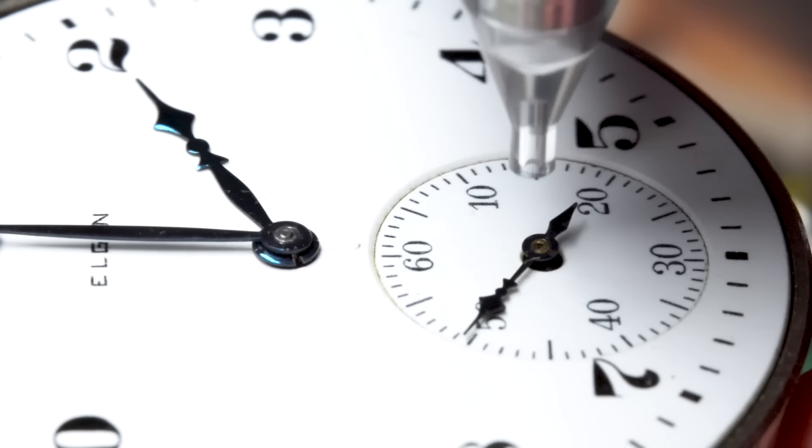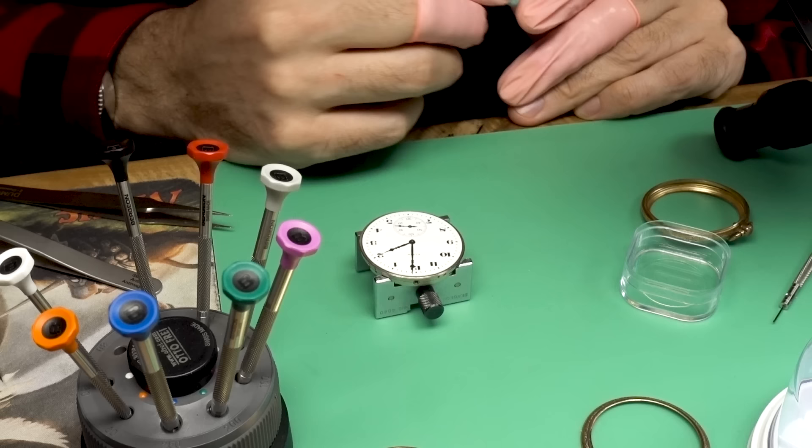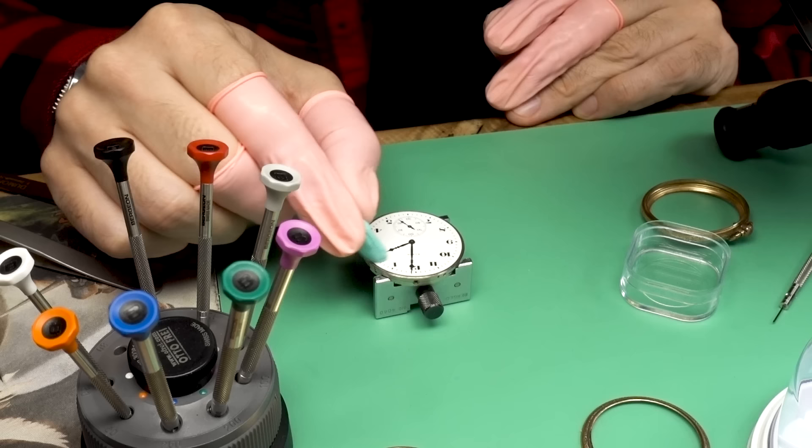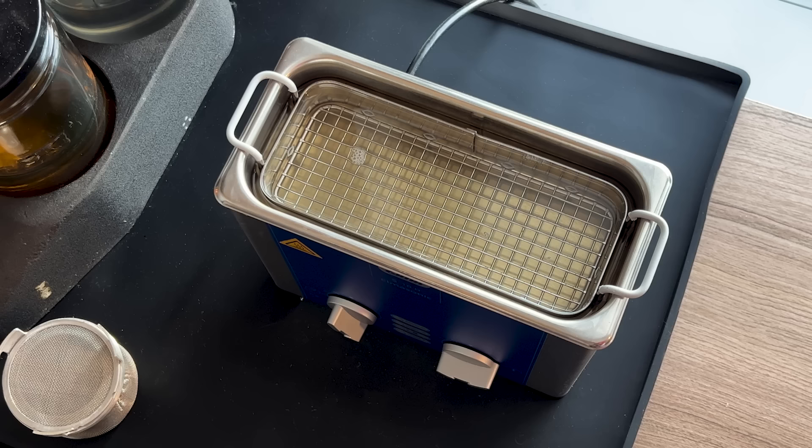Okay, second hand can go on now. And I'm going to use a piece of Rodico just to lightly clean up the hands. I didn't do any type of restoration work on them. You can polish hands like this. They can take a polish, but these looked really good to me. And I just didn't feel like I needed to do anything to them.